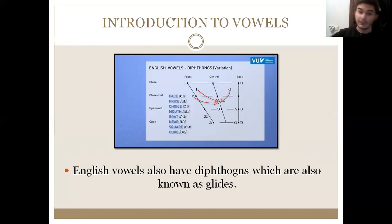You would go between A and E, you would go A. You would say I as in price, O as in choice, O as in mouth, and goat as in O, and E as in near, and A as in square, or cure as in Ur. You can see you can go between one vowel and another, and you can glide between those vowels, and you can make new sounds basically.